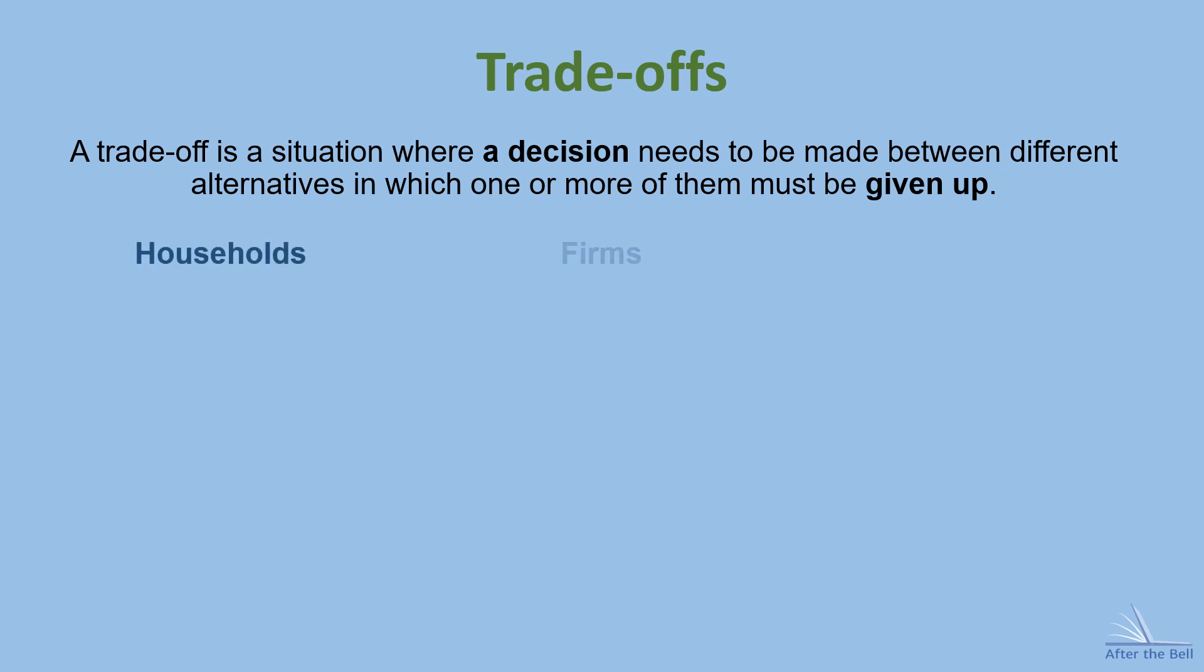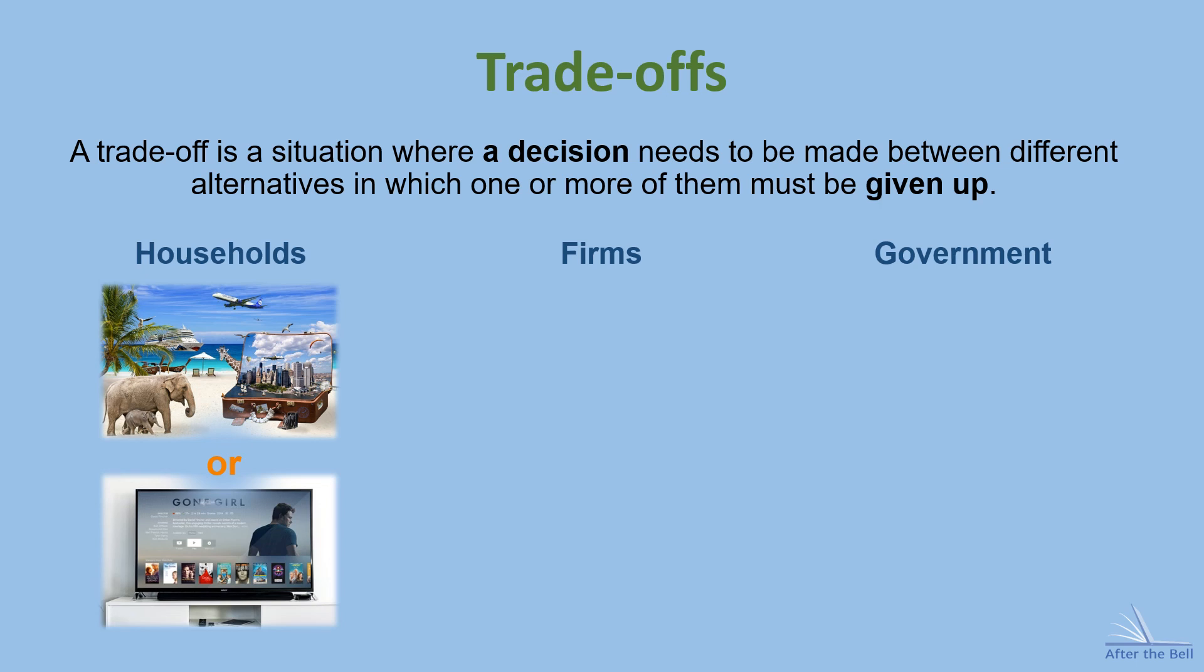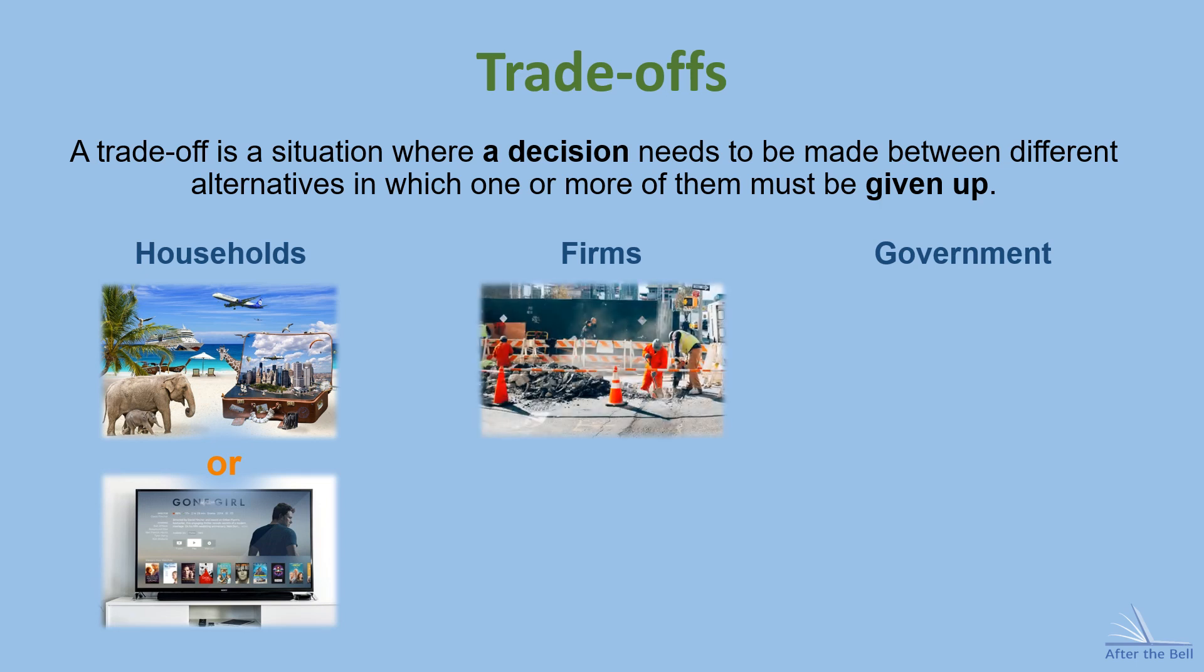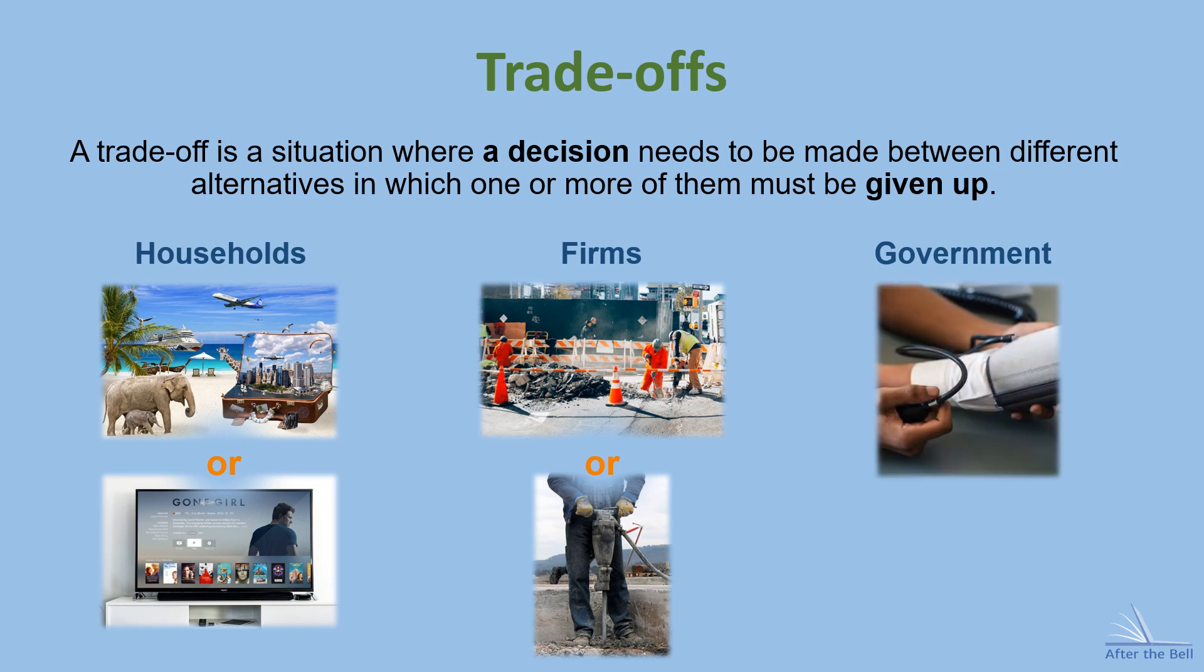Households, firms and businesses, and the government. Households, that's me and you and our families, might have to decide whether to go on holiday or buy a new television. Firms and businesses might need to decide whether to employ an extra worker or invest in updating their equipment, and the government might face the trade-off of whether to spend more on health care or education.